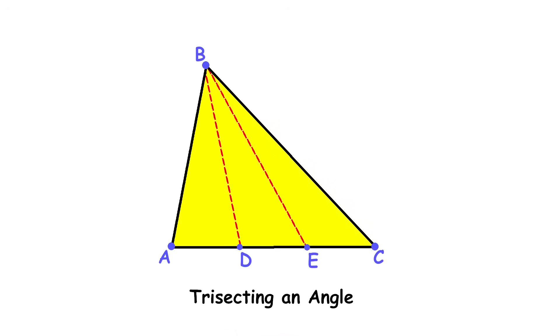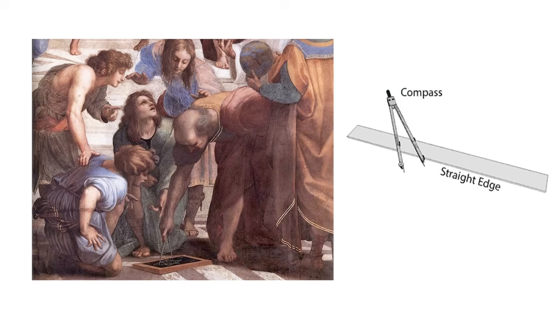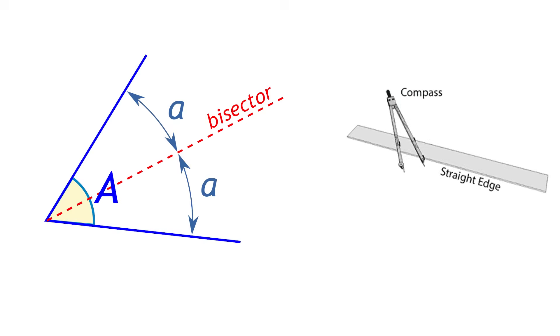Trisecting an Angle. In ancient Greece, mathematicians were interested in constructing geometric shapes and lines using only a compass and a straight edge. It's pretty much a ruler without any markings. One thing they could do easily was to bisect or cut in half an angle. There's a simple four-step process to do this using just a compass and a straight edge.